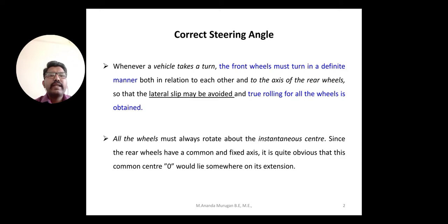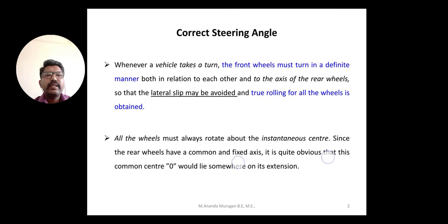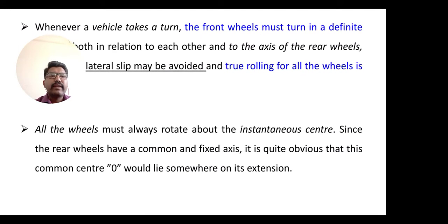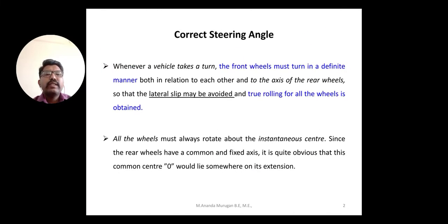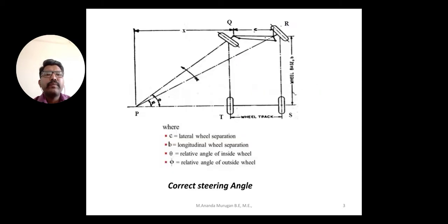First one is correct steering angle. The correct steering angle is a theoretical angle for a steering mechanism. Whenever we are going to turn a vehicle, the front wheels must turn in a definite or organized manner to move the vehicle equally. That definite angle is with respect to the pivot center placed in the rear axle. The pivot center is also called the instantaneous center. The rear wheels have a common and fixed axis, so that center, called point O, lies somewhere in the extension of the center point of the rear axle or the center point of the differential.